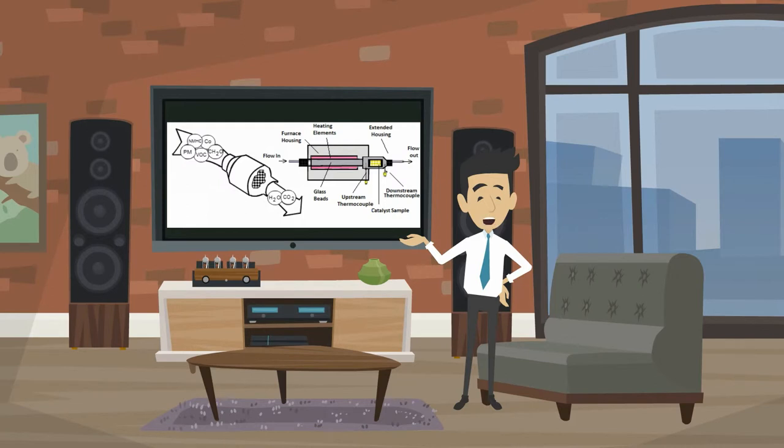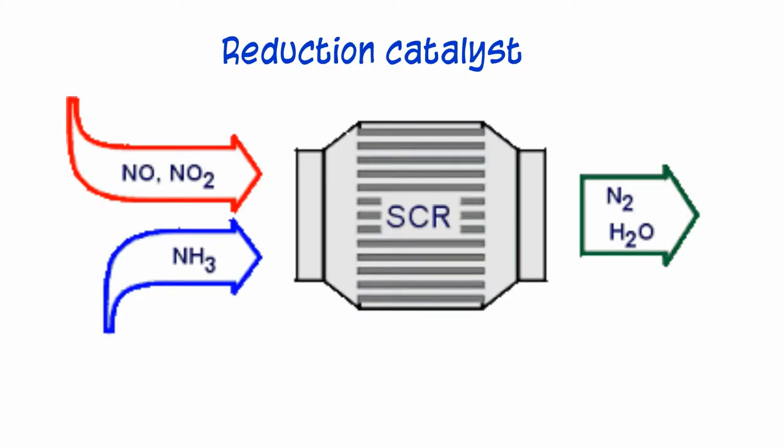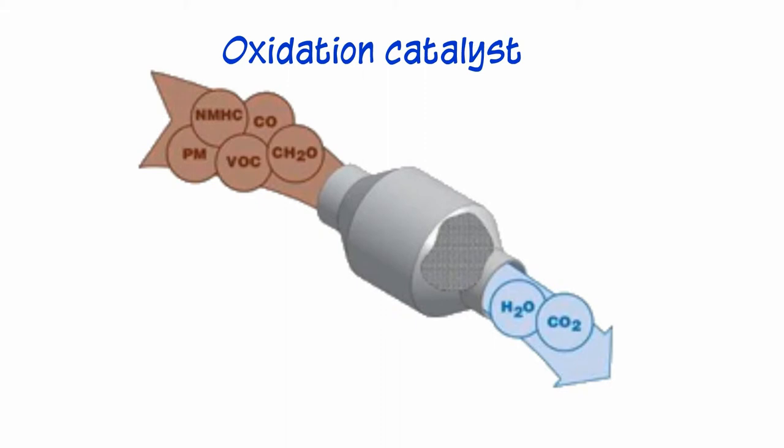The catalyst speeds up the rate of chemical reactions. There are two types of catalytic converters available in vehicles: reduction catalyst and oxidation catalyst.